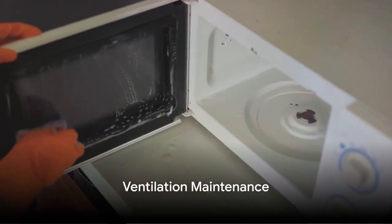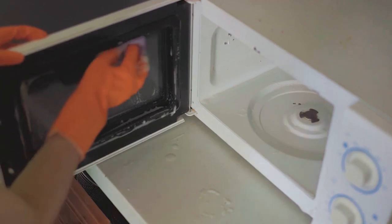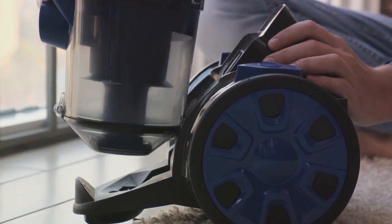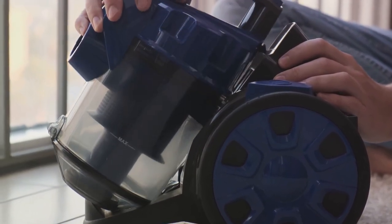Let's not forget about ventilation. The ventilation system of your microwave needs to breathe freely. Ensure it's clean and unobstructed for optimal performance. A simple dusting or vacuuming can keep the vents clear and the microwave running efficiently.